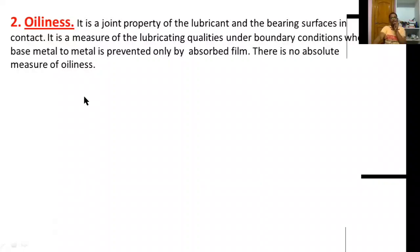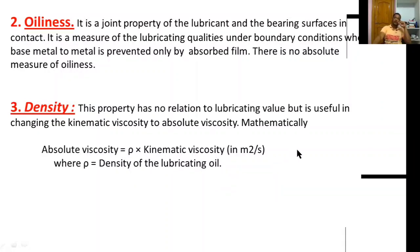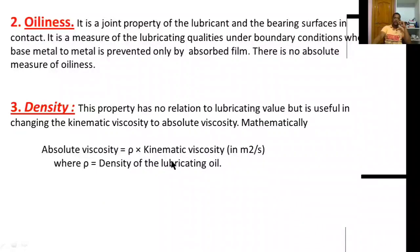Oilness is the joint property of the lubricant and the bearing surfaces in contact. It is a measure of the lubricating qualities under boundary conditions where metal-to-metal contact is prevented only by an adsorbed film. There is no absolute measure of oilness. Density has no direct relation to lubricating value but is useful in converting kinematic viscosity to absolute viscosity. The relation is: absolute viscosity = density (rho) × kinematic viscosity.